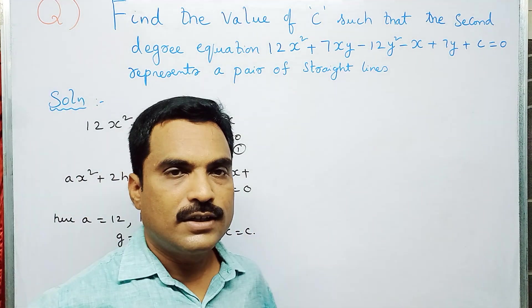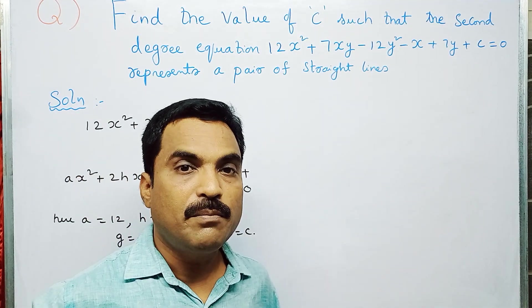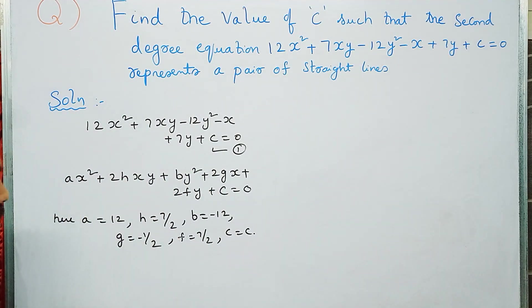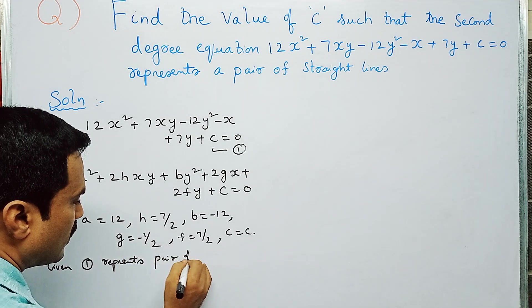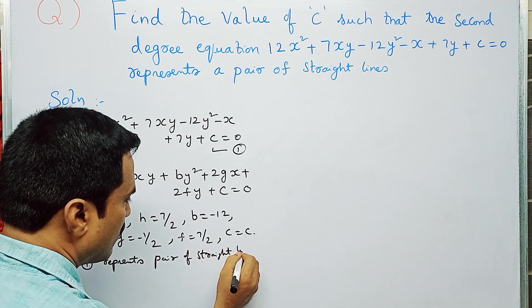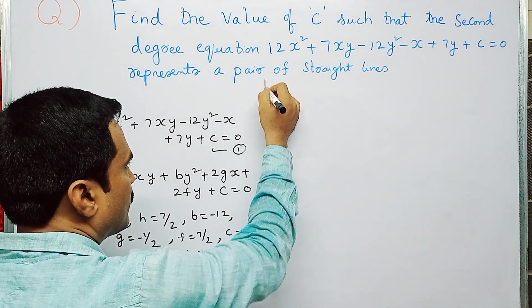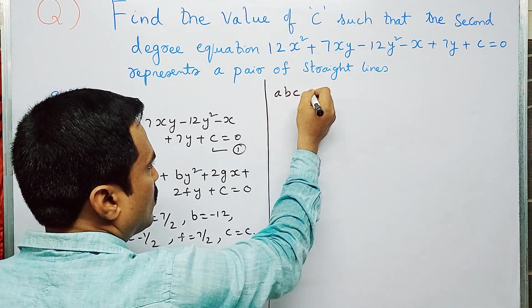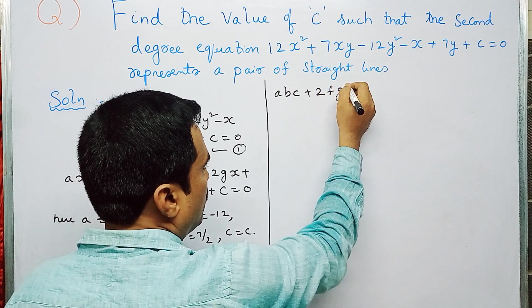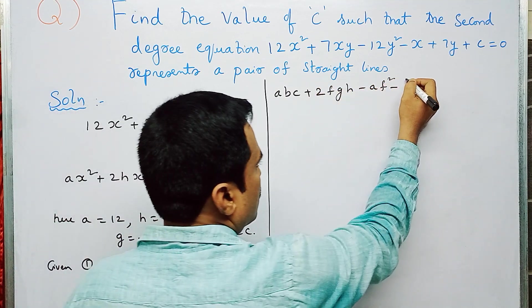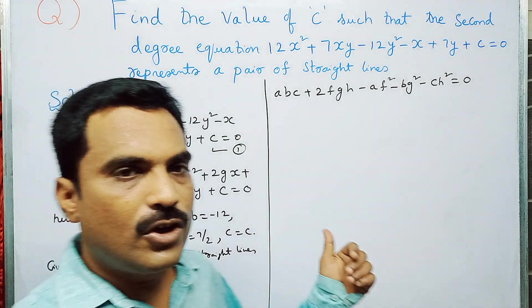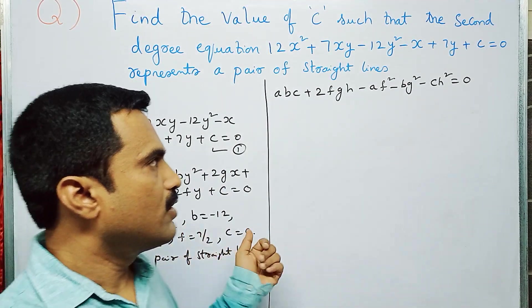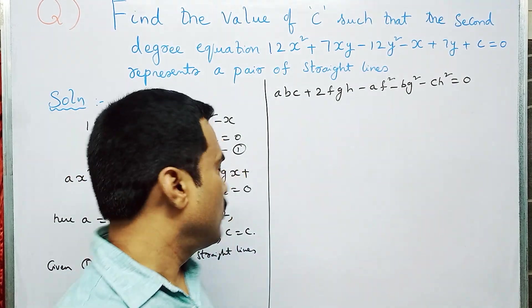Next, we write the condition for the given equation to represent a pair of straight lines. The condition is: ABC + 2FGH - AF² - BG² - CH² = 0. We now substitute all the values — A, B, C, F, G, and H — into this condition to find the value of C.